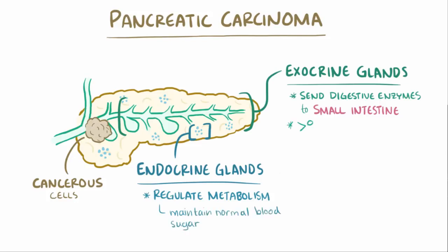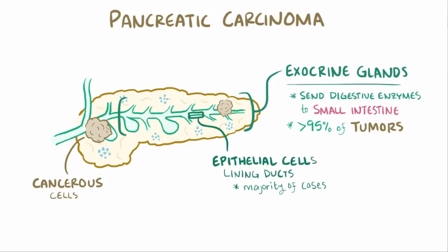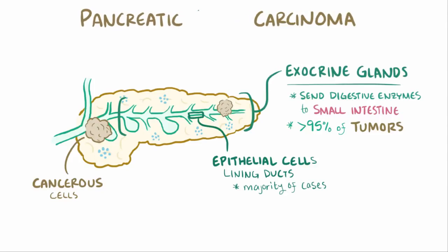Over 95% of pancreatic tumors develop in the pancreas' exocrine tissues, and of these, tumors arising in the epithelial cells lining the pancreatic ducts account for the vast majority of cases. This type of pancreatic cancer is known as pancreatic adenocarcinoma, due to the cells' glandular-like appearance under the microscope.